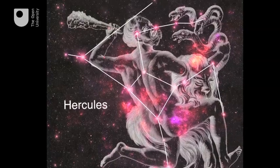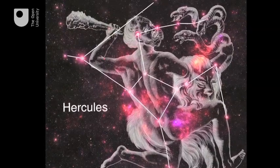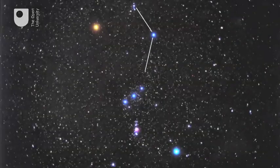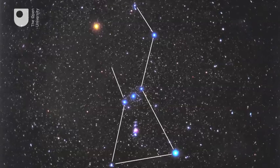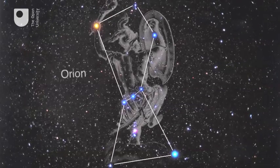These are based on the 48 constellations listed by the Greek astronomer Ptolemy in the 2nd century, with some modern modifications and additions.